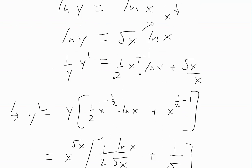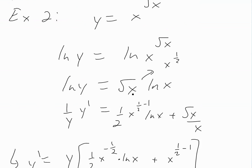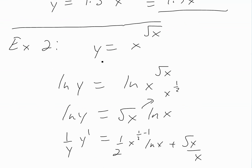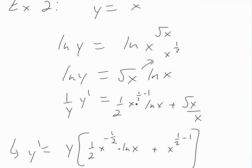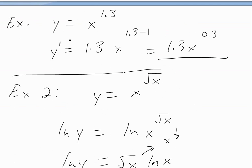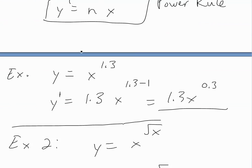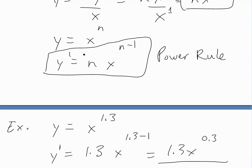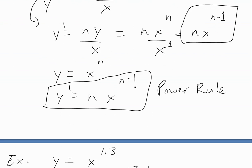As long as you understand the principle — using logarithmic differentiation to bring the exponent down and then applying the general power rule — you can handle these problems. The general power rule is the same as the one for positive integers, but it applies for all real values of n.